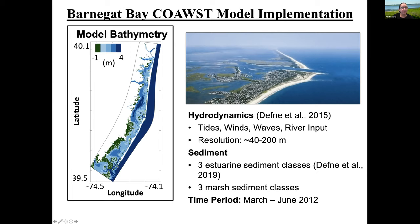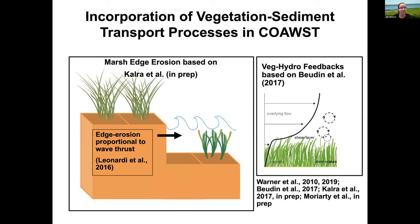We implemented the COAST model, which had previously been used to look at sediment transport during Hurricane Sandy. For this study, we also took advantage of recent COAST upgrades, including vegetation hydrodynamic feedbacks based on Bowdoin et al., as well as marsh edge erosion, which allows sediment to be eroded from the edge of marsh grid cells and put into the estuary. We assumed this edge erosion was proportional to wave thrust.